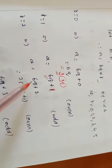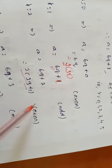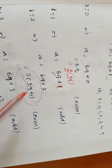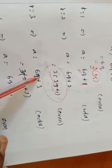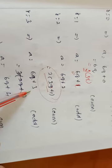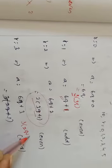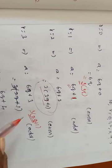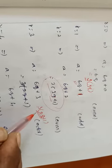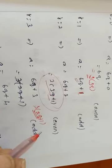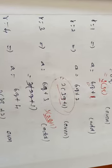For R equal to 2, we can write 6q plus 2. Taking 2 as common: 2 into 3q plus 1, which is 2 into something — there is no addition of an odd number, so automatically that whole thing is even. For R equal to 3, then A equal to 6q plus 3. Even number plus one odd number gives an odd resultant. Or, factoring: 3 into 2q plus 1 — odd number into any number, and the product of odd numbers is always odd. So 6q plus 3 is an odd number.